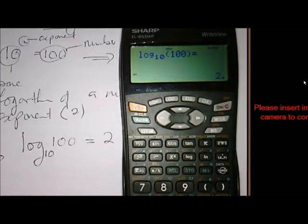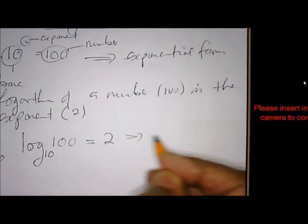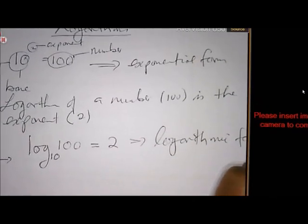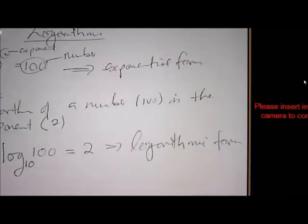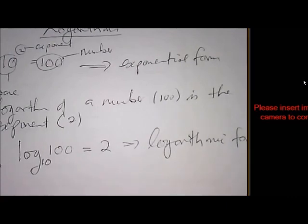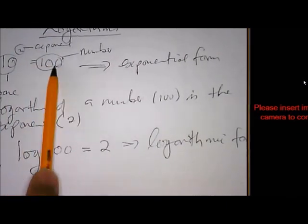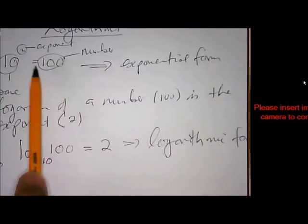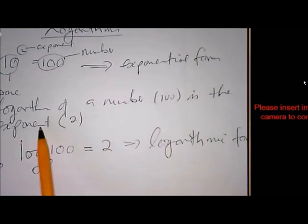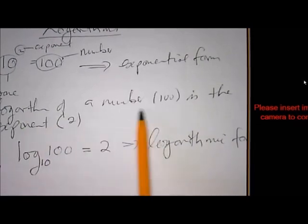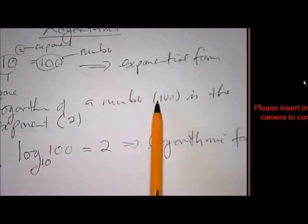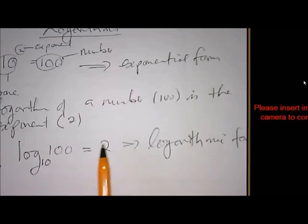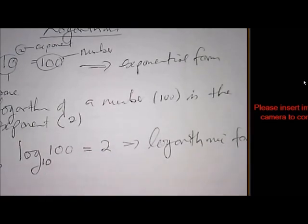So there you are, guys. So this is then called the logarithmic form. So it's not so difficult to understand logs. Let me go through it again. If I take the number 10 squared equals to 100, then 10 is the base, 2 is the exponent, 100 is the number, and this is what we call exponential form. For the change to logarithmic form, I must remember this definition: log of a number, which is a hundred in this example, is the exponent. Log means exponent. So the log of the number is the exponent, and then the base is 10.